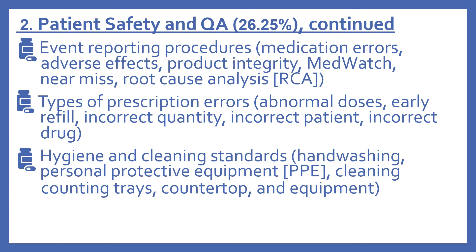Some more patient safety and quality assurance areas that are covered include event reporting procedures: medication errors, adverse effects, product integrity, MedWatch, near miss, and root cause analysis. Types of prescription errors include abnormal doses, early refill, incorrect quantity, and incorrect patient. Also covered are hygiene and cleaning standards — things like hand washing, personal protective equipment, cleaning counting trays, countertop, and equipment.